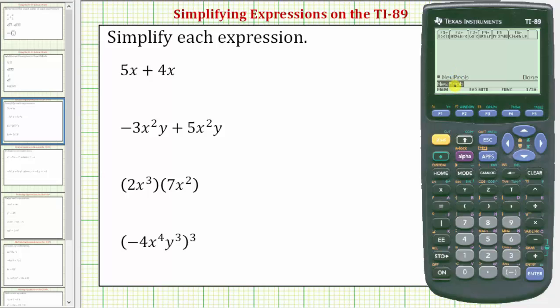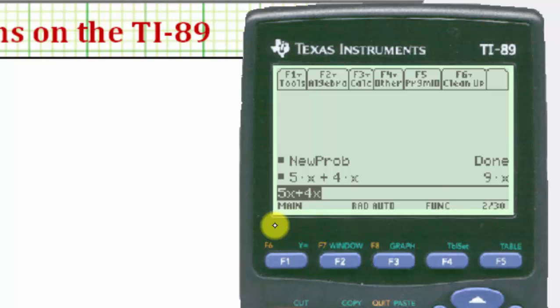Now we can simplify the given expressions. For the first expression we enter 5x + 4x, enter, and the expression simplifies to 9x.